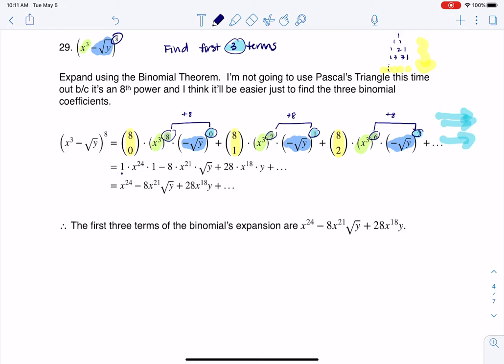Then it's a matter of playing this out. 8 choose 0 on my calculator is 1. x cubed to the 8th is x to the 24th. Negative square root of y to the 0 is 1. This first term becomes x to the 24th.